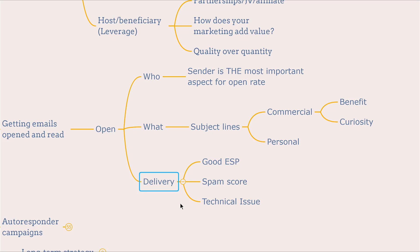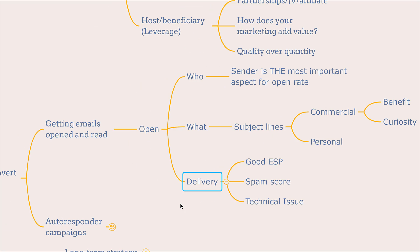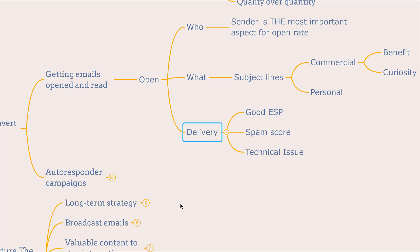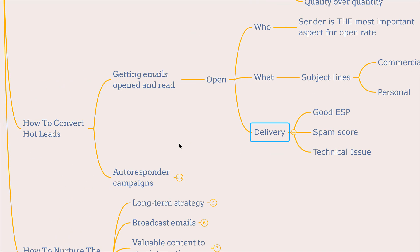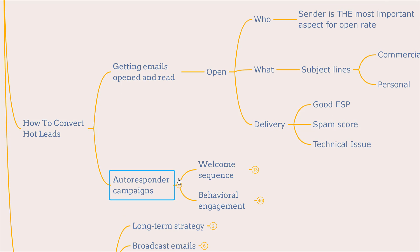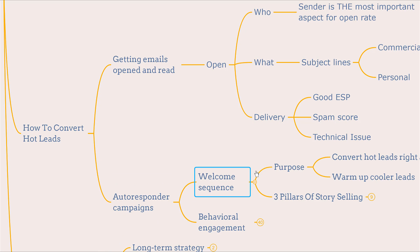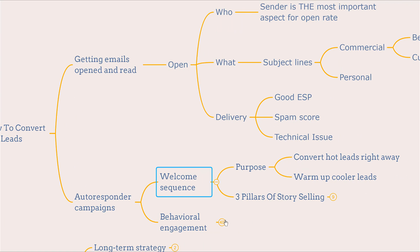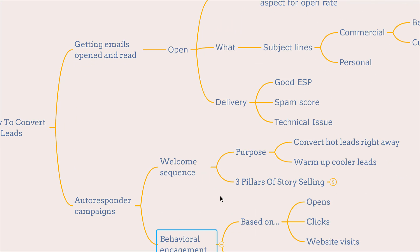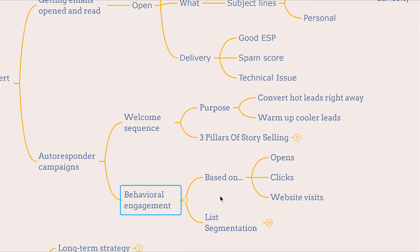When it comes to deliverability, it involves more technical factors such as the email service provider, ESP, low spam score, as well as other variable factors. Other factors responsible for converting hot leads include autoresponder campaigns, welcome sequences, and behavior engagement — those are the two big factors of autoresponder campaigns.